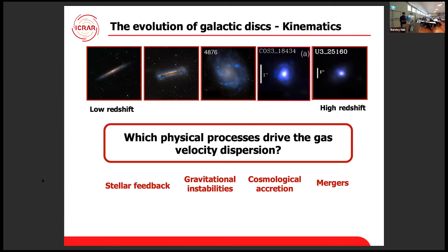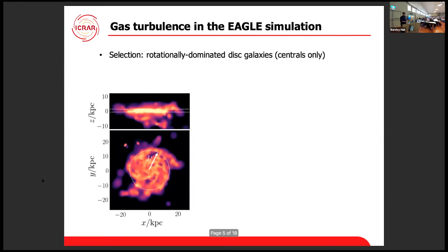One of the reasons why studying this is so complex is that all of these processes are happening at the same time, making it extremely difficult to disentangle the effect of each separately. That's why we want to use the EGL simulation, which was introduced by Ruby in the previous talk. The EGL simulation is a cosmological hydrodynamical simulation that provides a very large sample of galaxies spanning a wide range of stellar masses and star formation rates, so we can study different environments and very different types of galaxies.